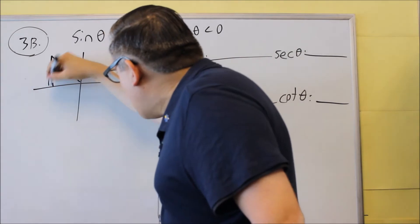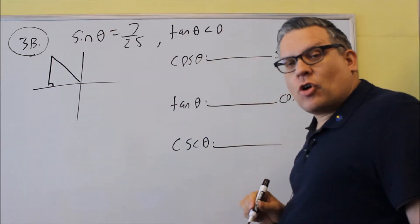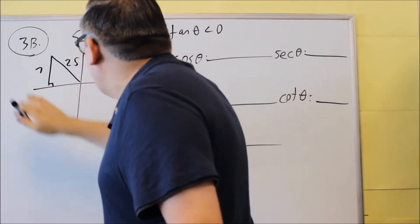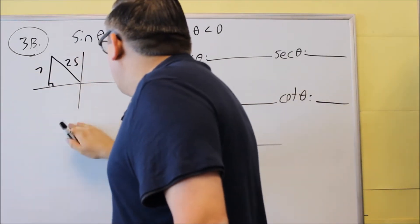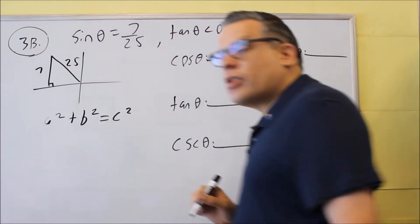And when we draw it in the second quadrant, we're going to label the triangle based on the definition that's opposite over hypotenuse. Opposite is seven, hypotenuse is twenty-five. Once again you're going to use Pythagorean theorem to figure out the missing side, a² + b² = c².